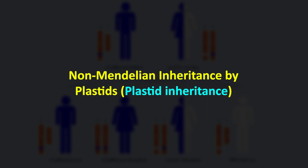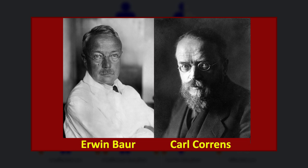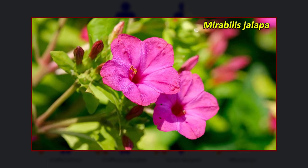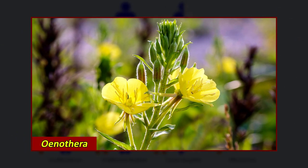Let's now discuss non-Mendelian inheritance by plastids, i.e., plastid inheritance. The inheritance pattern of plastid characters due to plasmogenes located in plastids is known as plastid inheritance. Plastid inheritance was the first case of non-Mendelian inheritance to be discovered, independently by Correns and Baur in 1909. The inheritance pattern of genes located in plastids is best studied in plants like the four o'clock plant (Mirabilis jalapa), Zea mays (maize), Primula synensis, and species of Oenothera lamarckiana.